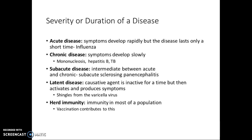Latent disease is when the causative agent is inactive for a time but then activates. Shingles is the classic example — you get chicken pox as a child or are vaccinated, and later in life the disease reactivates, producing a rash. Similarly, people exposed to tuberculosis who don't develop active TB get latent tuberculosis infection; the organism is present but suppressed. Later in life, when immune function drops, that latent TB can become active. Finally, herd immunity involves vaccinating enough people to prevent disease from being communicated from person to person.